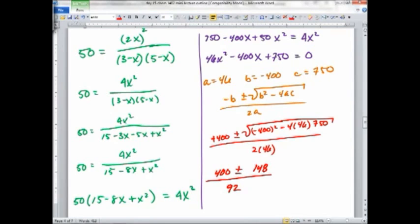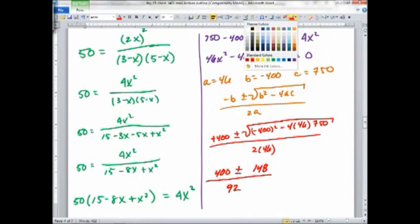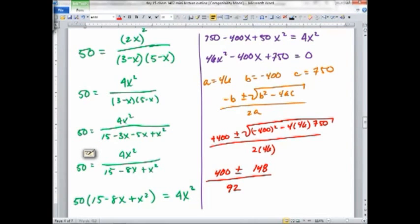Hopefully, carry three, four digits all the way through. 400 plus or minus 148 over 92. So, you end up with X equals something. So, 400 plus 148 divided by 92, about 5.96 or so. And 400 minus 148 divided by 92, I got about 2.74.